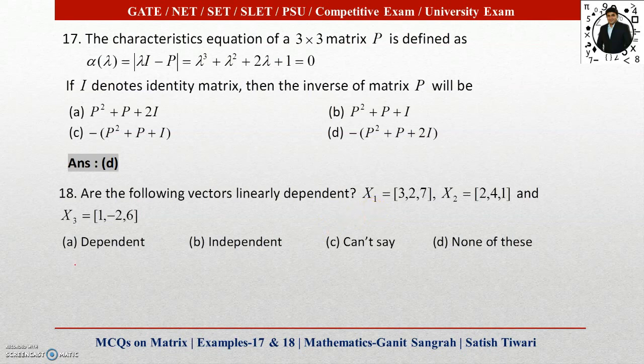By using these vectors I will form a matrix: [3, 2, 7; 2, 4, 1; 1, -2, 6]. By using row transformation, I will convert this 3 by 3 matrix into upper triangular form and then find out the rank.